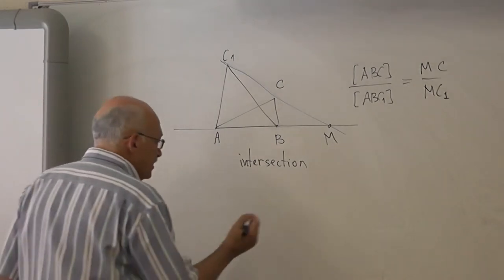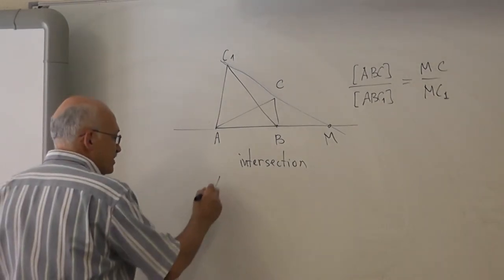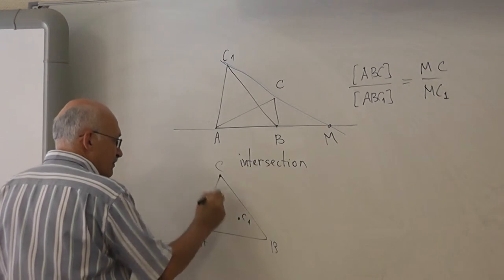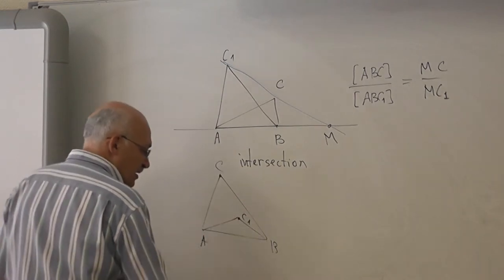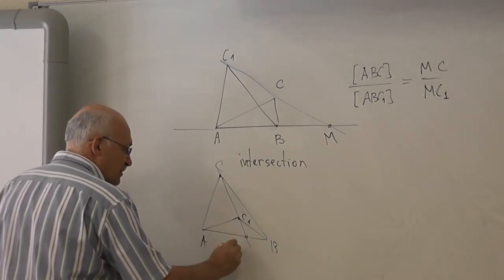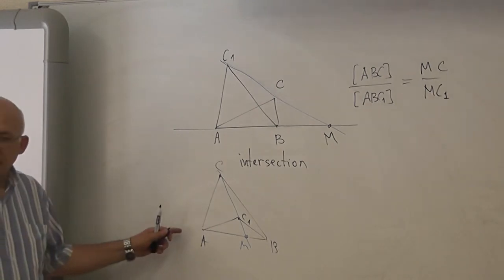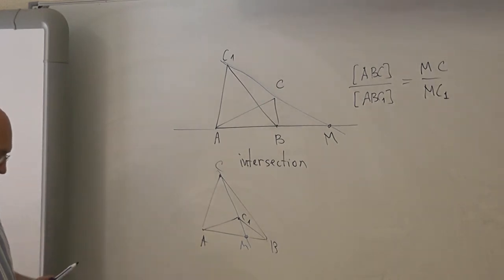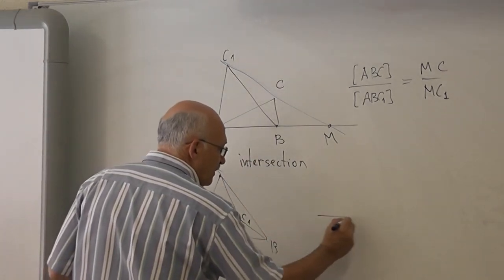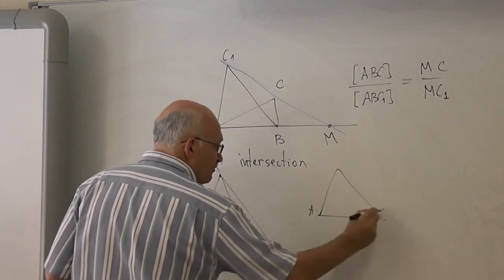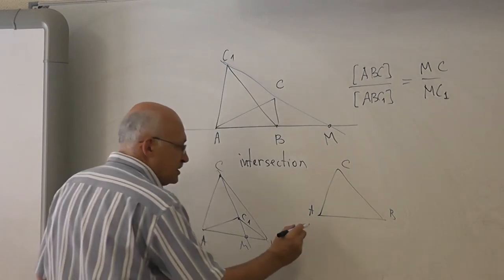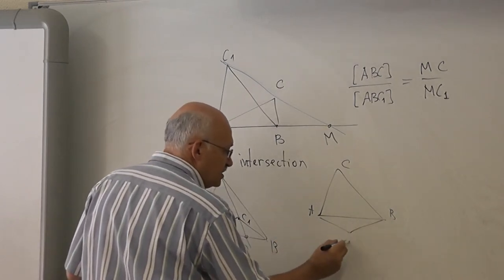For example, I will draw a couple of other positions. For example, A, B, C and C1. Then the point M will be found on the side. For example, A, B, C and A, B, C1.